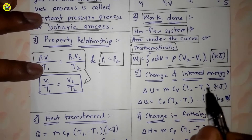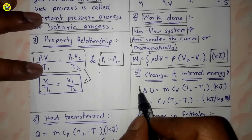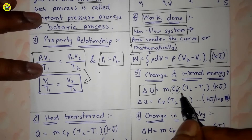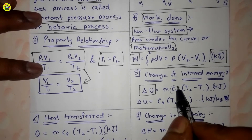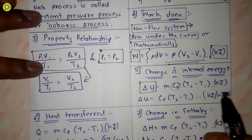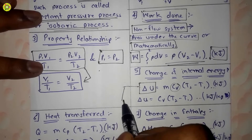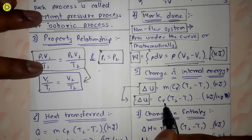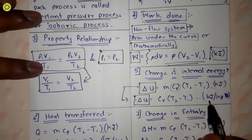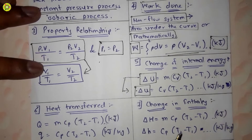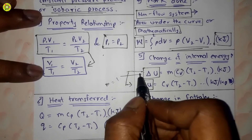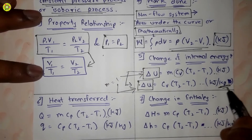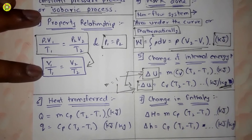The change in internal energy is denoted by ΔU and is equal to mCv(T2 − T1) in kilojoule, where Cv is the specific heat at constant volume. On a unit mass basis, the specific internal energy is given by Δu = Cv(T2 − T1) in kilojoule per kg, since mass m = 1.